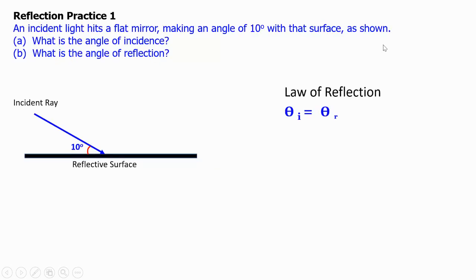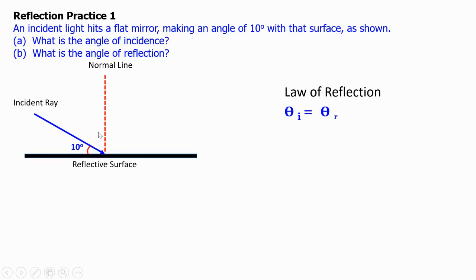Reflection practice 1. An incident light hits a flat mirror making an angle of 10 degrees with the surface, as shown in this picture. What is the angle of incidence and what is the angle of reflection? First, draw a normal line, which is perpendicular to the reflected surface. The normal line makes 90 degrees with the reflected surface, so this angle here is 80 degrees.